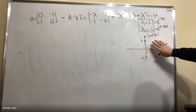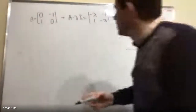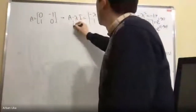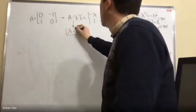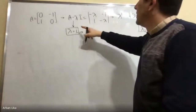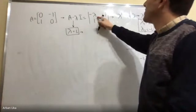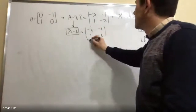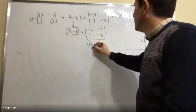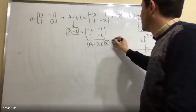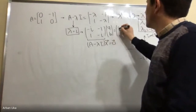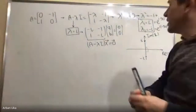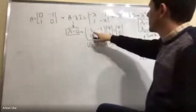Now let's find the eigenvectors. We apply the same approach: we compute (A minus lambda·I) and substitute lambda equal to i. This gives the matrix: [-i, -1; 1, -i]. We set (A minus lambda·I) times vector x equal to zero. We check the rank of this matrix — it should be one because the determinant should equal zero. Indeed, minus one plus one equals zero, which confirms rank equals one.